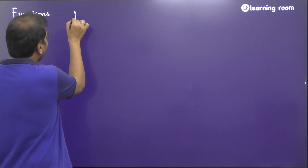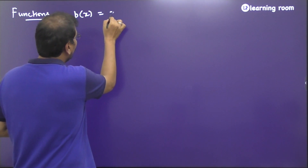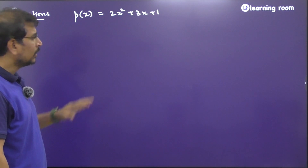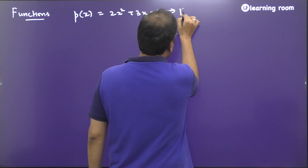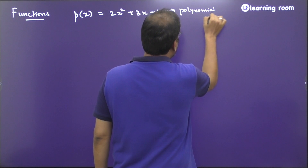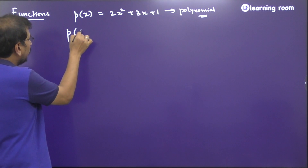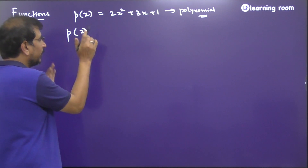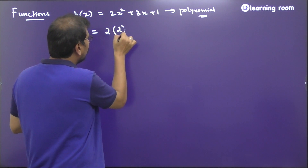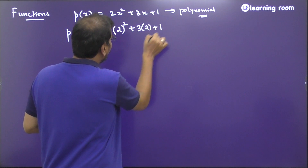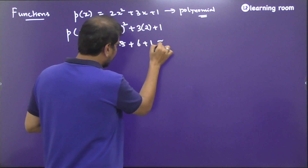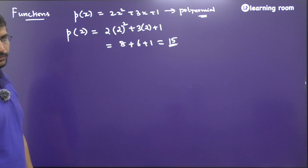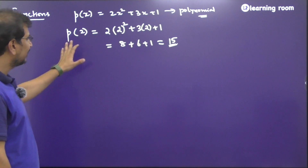In your lower grades, if something like p(x) = 2x² + 3x + 1 was given, this is basically a quadratic polynomial. Now if I ask you what is p(2), you would substitute 2 wherever x appears: 2×(2²) + 3×2 + 1 = 8 + 6 + 1 = 15. So the value of this quadratic polynomial at x = 2 is 15.